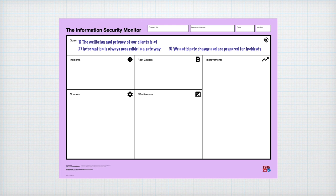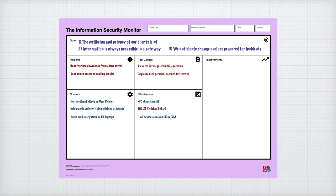When the controls have been implemented, the team periodically uses the Information Security Monitor to discuss any incidents that have occurred and determine their root causes. They establish the effectiveness of controls and identify possible improvements for the next cycle.